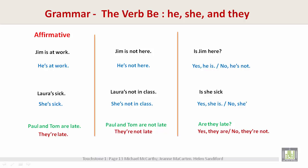Affirmative: 'Jim is at work. He's at work. Laura is sick. She's sick. Paul and Tom are late. They're late.' Negative: 'Jim is not here. He's not here. Laura is not in class. She's not in class. Paul and Tom are not late. They're not late.' Interrogative — yes or no questions: 'Is Jim here? Yes, he is. No, he's not. Is she sick? Yes, she is. No, she's not. Are they late? Yes, they are. No, they're not.'